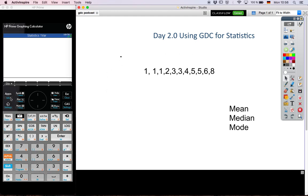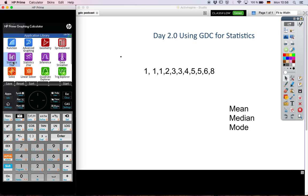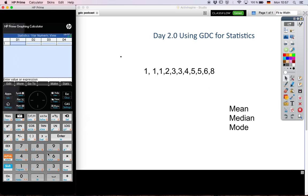Well first we need to go into the apps and choose, because we're only looking at one set of data, we're looking at one variable stats. Okay, so one, one, one, two, three, three, four, two fives? That's right, and six and eight. Excellent.